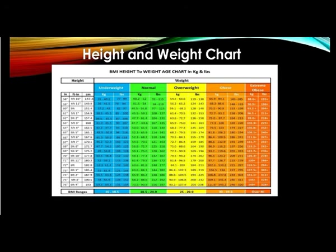Now we are going to study about the two popular methods to calculate healthy weight: the height and weight chart, and the Body Mass Index. The height and weight chart tells us about healthy body weight, and is divided into male and female charts. The BMI method is another way to determine whether one has a healthy body weight.